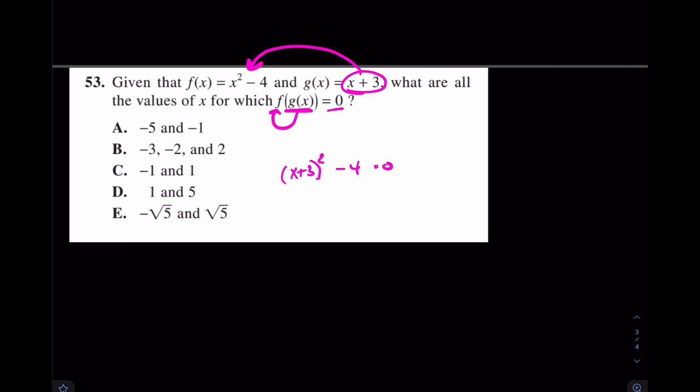There are a few different ways to solve this one, but I'll move the 4 over. I have X plus 3 squared equals 4. From here, square rooting both sides, you will have X plus 3 equals plus or minus 2. Again, what did I do there? I square rooted both sides.